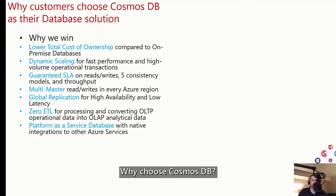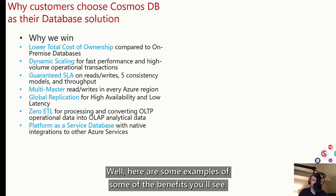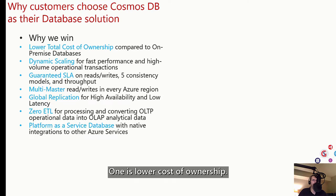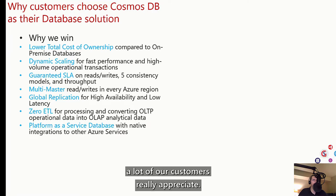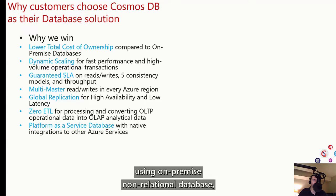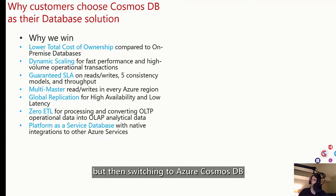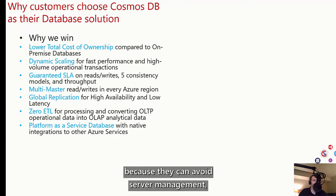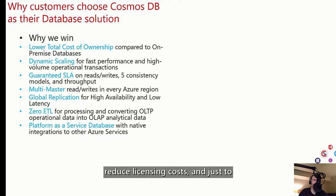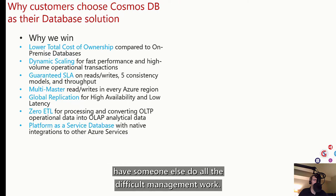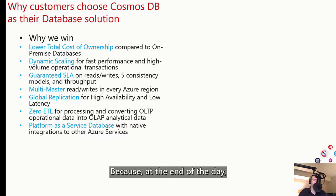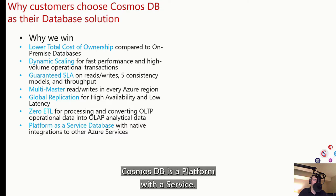So why choose Cosmos DB? Here are some examples of the benefits you'll see. One is lower cost of ownership — that's something a lot of our customers really appreciate. We've seen many customers initially using on-premise non-relational databases switch to Azure Cosmos DB because they can avoid server management, reduce licensing costs, and have someone else do all of the difficult management work because Cosmos DB is a platform as a service.